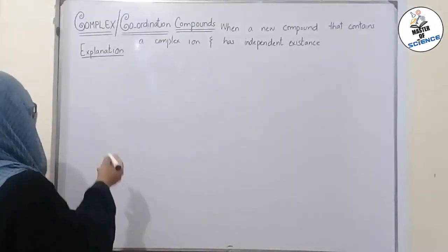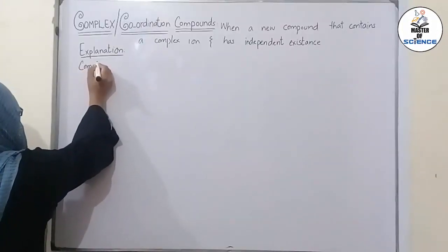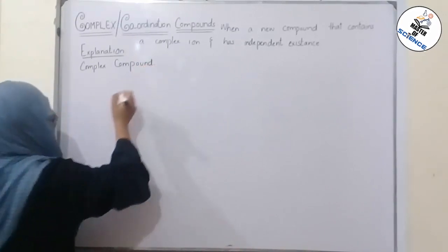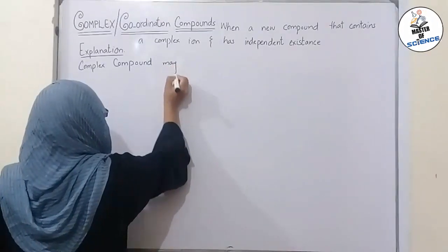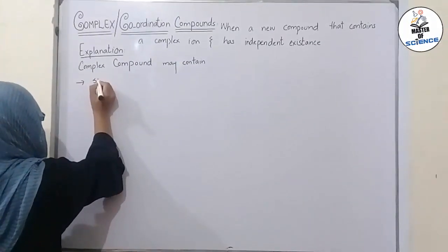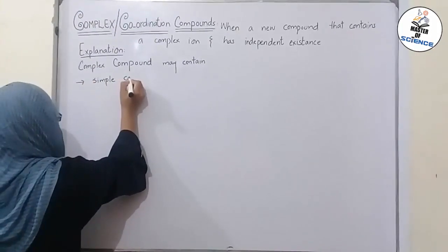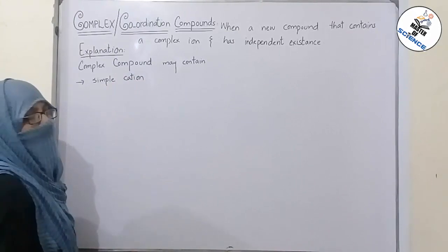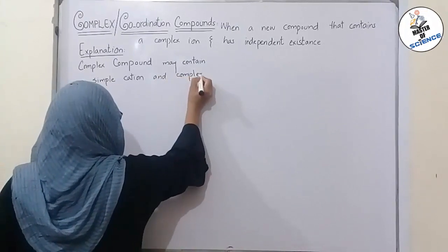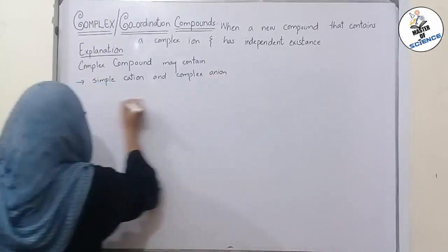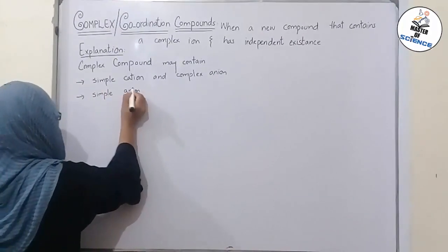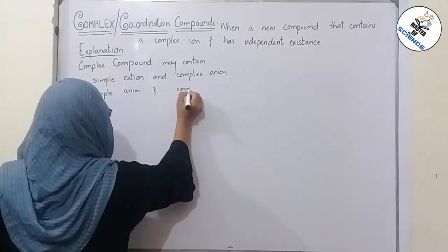A complex compound may contain a simple cation and a complex anion — as in our example, K⁺ is the simple cation and ferrocyanide is the complex anion. It may also contain a simple anion and a complex cation.